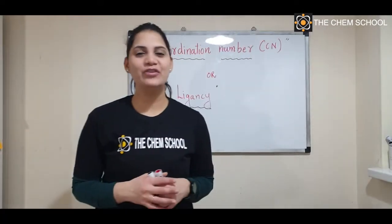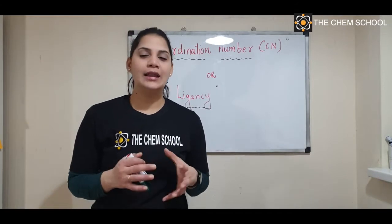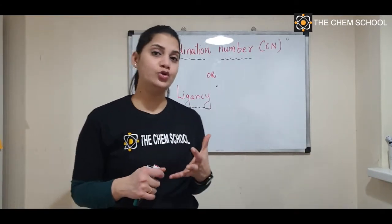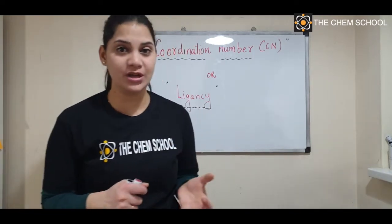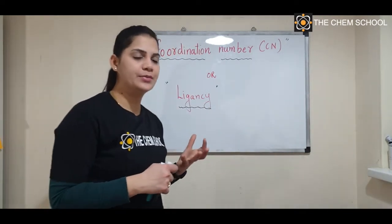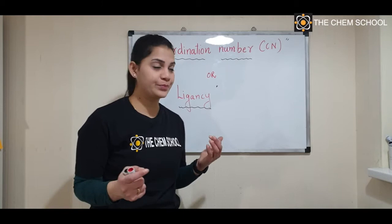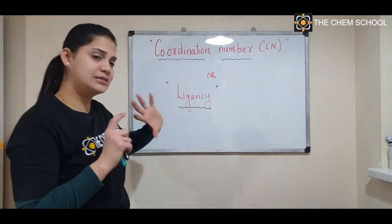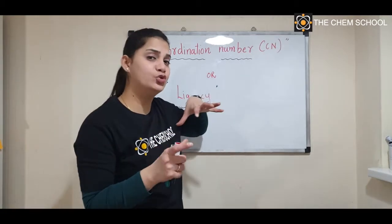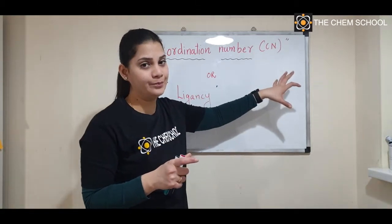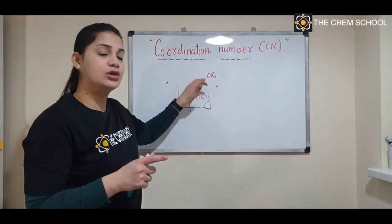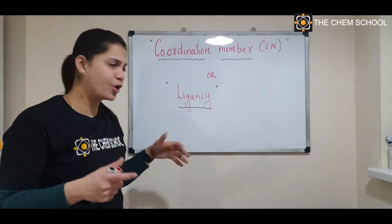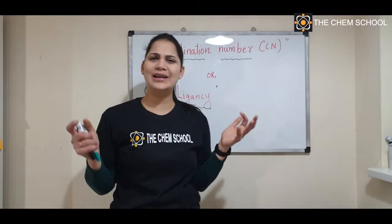Hello everyone, and welcome back to the Chem School. In the last class we spoke about oxidation number, and today we are going to talk about something called coordination number. The symbol we will use for it is capital CN, and it is also called ligancy. So CN, coordination number, and ligancy all mean the same thing.